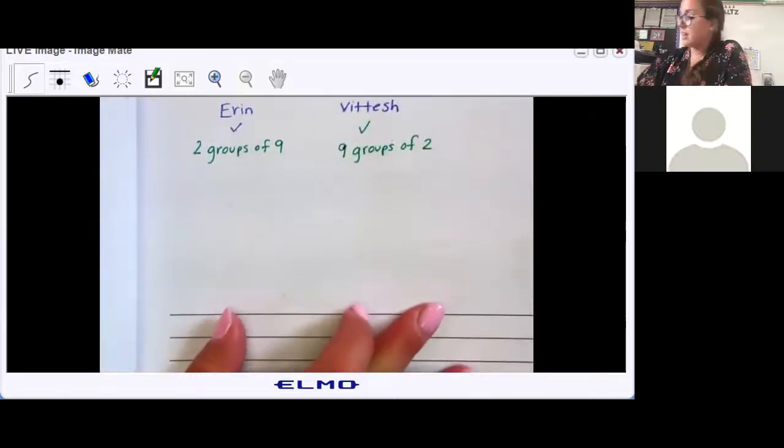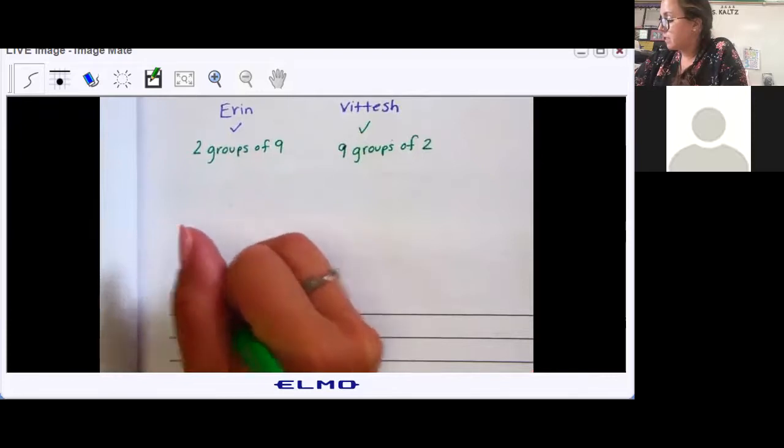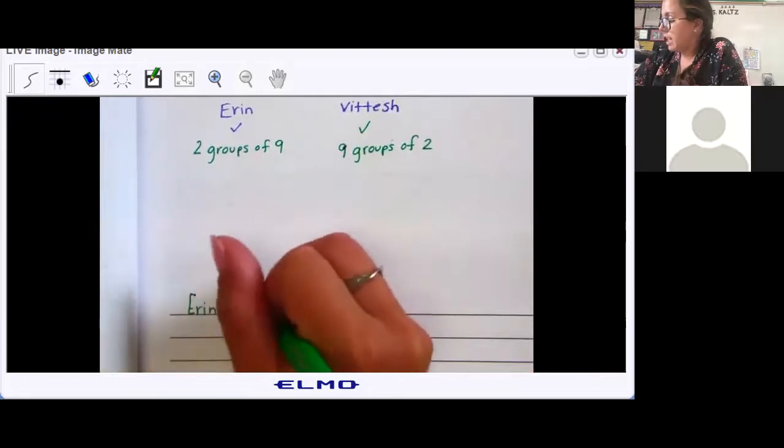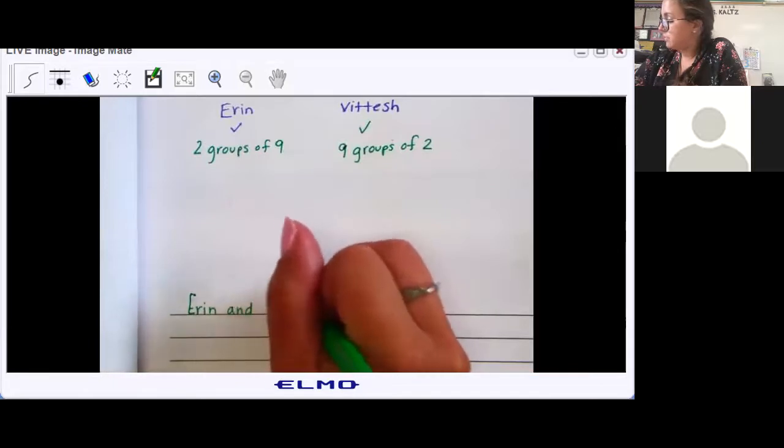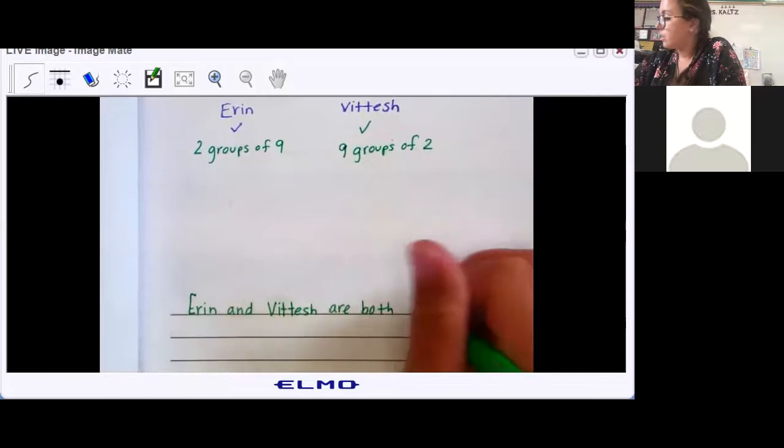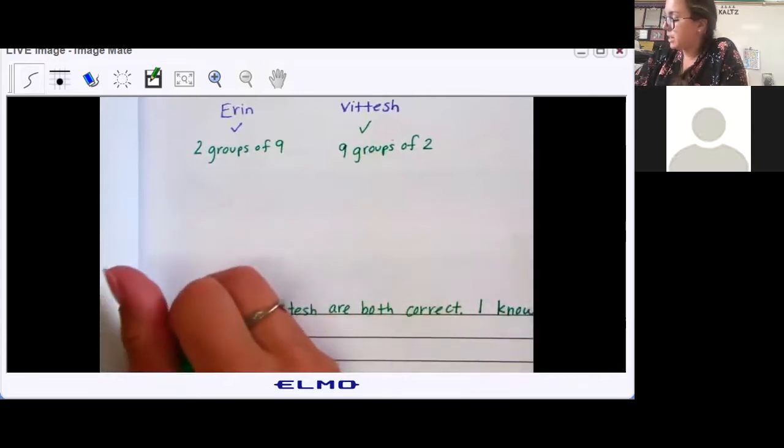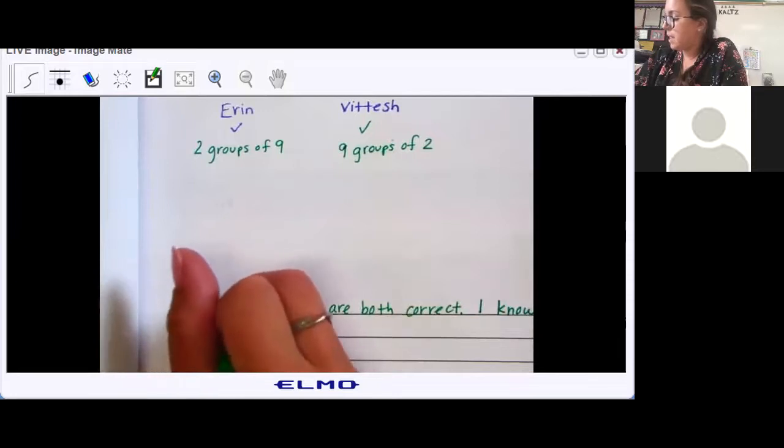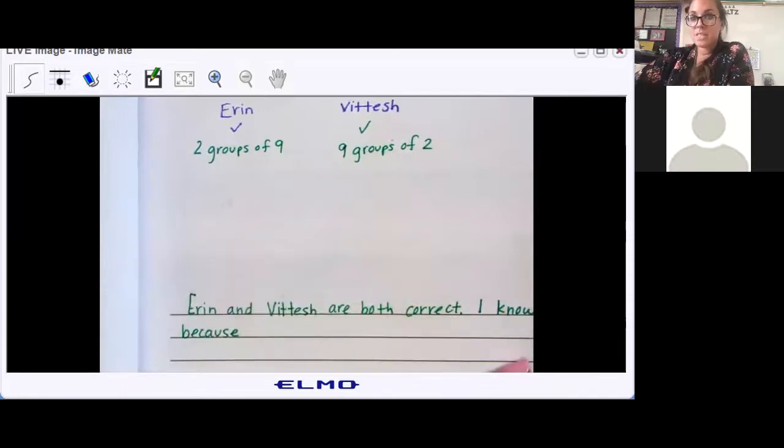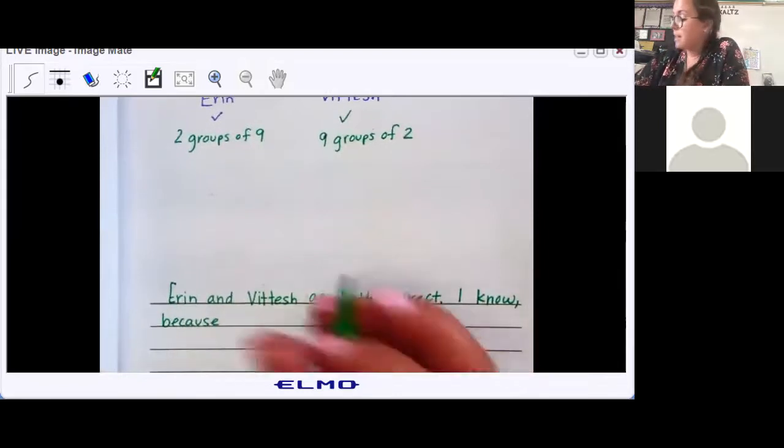So hopefully down here you said they're both correct, or you said Erin and Vatish or Vitesh are both correct. I know this because - these are kind of our three magic words when it comes to explaining our math. We say our answer, then you have to say how you know. I know this because, or I know because